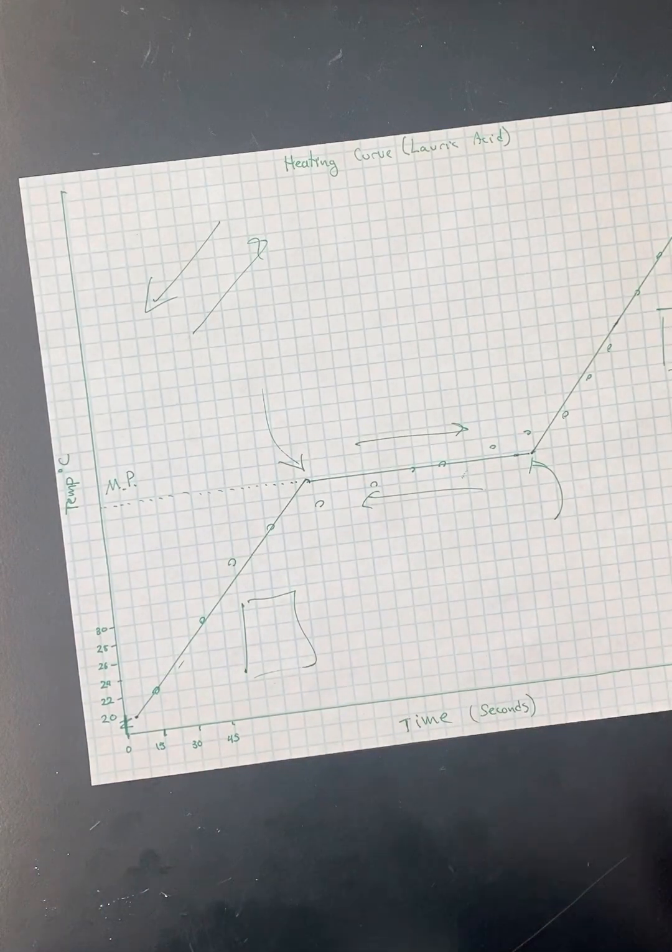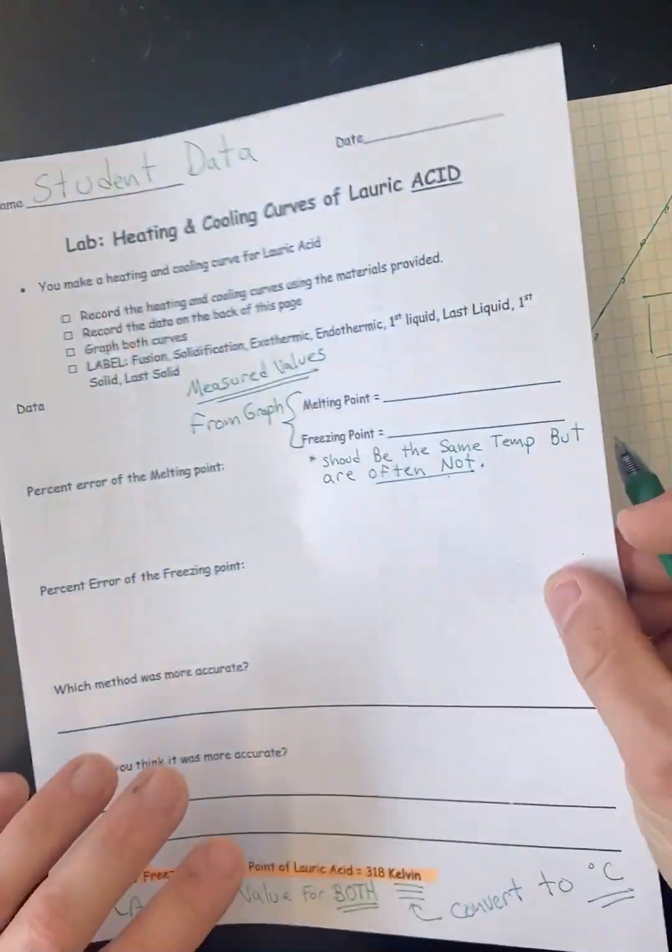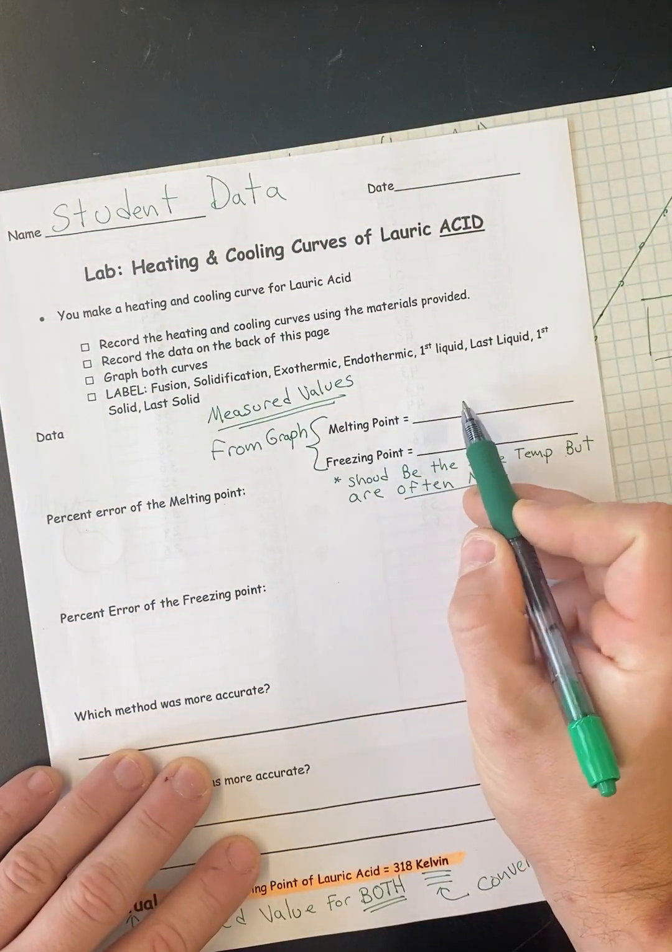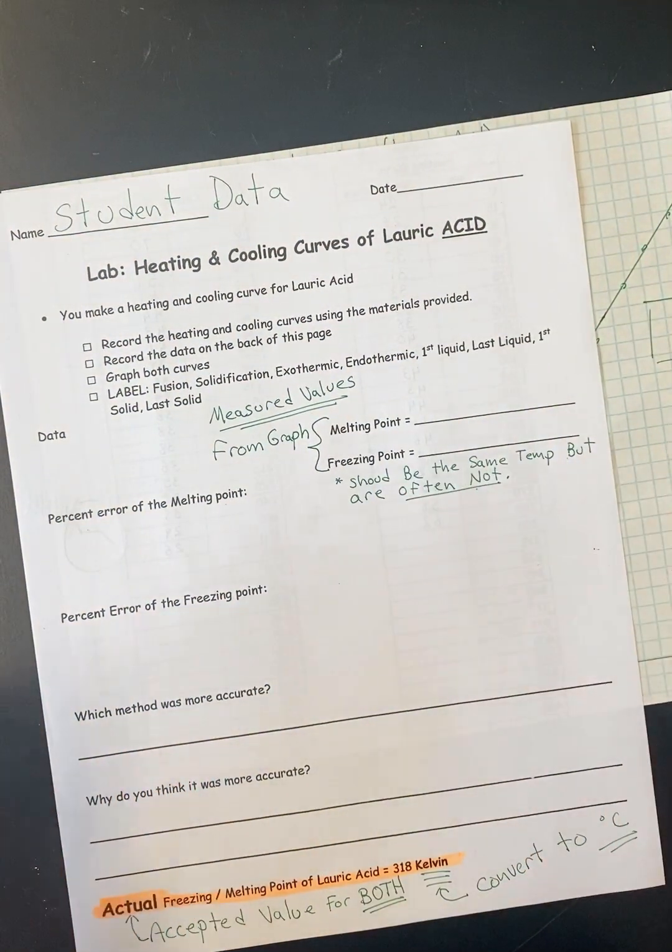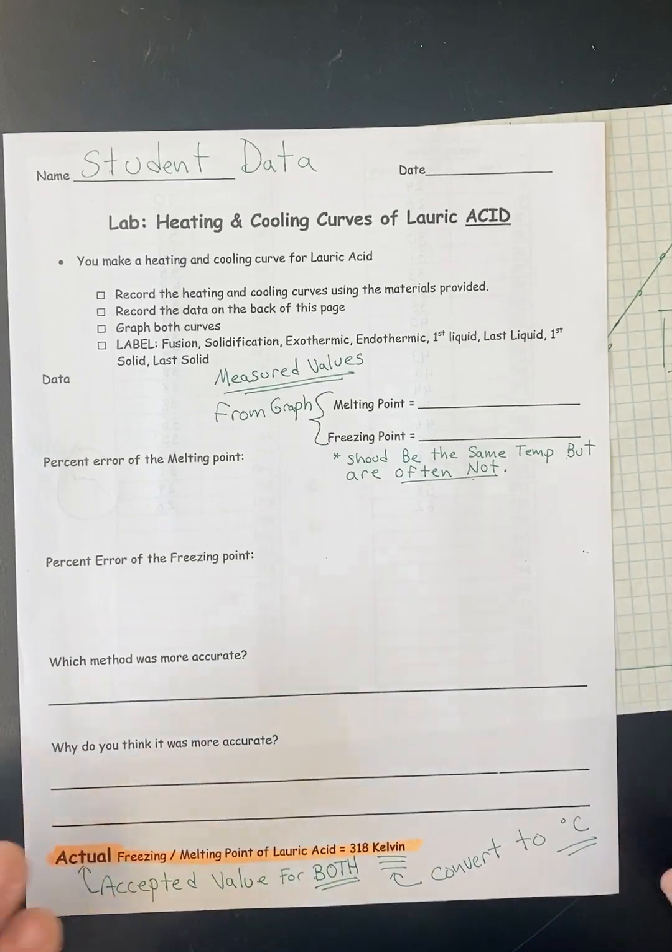Now, theoretically, those temperatures, whatever number this is, you're going to put it right here for your melting. They should, melting and freezing, should be the same. But in real life, that actually never works. It usually doesn't work out that way. And they are similar, but they might be a few degrees apart. And there's a bunch of reasons for that.